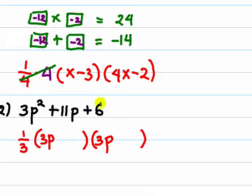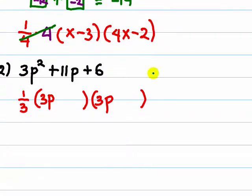And then the next step, look at the product of the leading term and the constant coefficient. So 3 times 6 is 18 and we put the coefficient of p, 11.